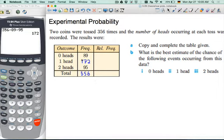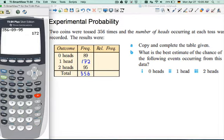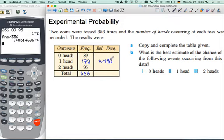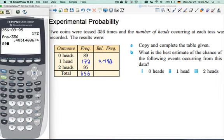So if we're doing relative frequency, we take the frequency and divide it by the total. So since I have 172 there, I'm just going to divide by 356 to get this: 0.483. That should be good for three significant figures. And then 89 divided by 356 equals 0.25.